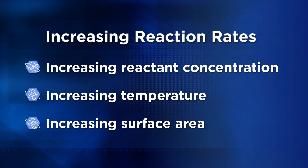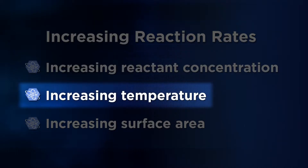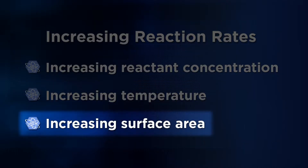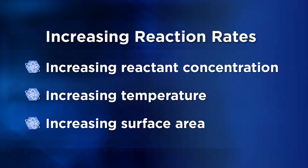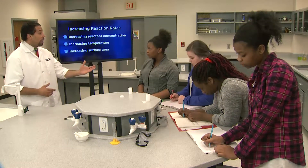Overall, it appears that increasing the reactant concentration, temperature, and surface area all increase the rate of reaction, and temperature has the biggest impact. There's one more very important way to increase the rate of a reaction: by using a catalyst.